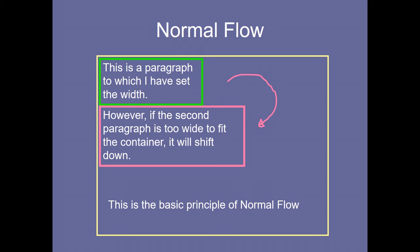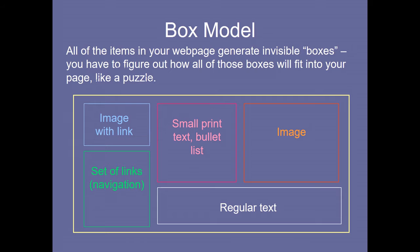The basic principle of normal flow: one big container holds contents, and if anything goes beyond that line it automatically goes to the next row. This comes under the box model. Every item in your web page generates an invisible box, and you have to figure out how all those boxes fit into your page like a puzzle. So an image, navigation links, bullet list, regular text — each is one box.